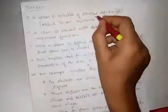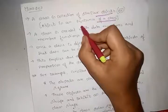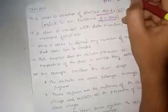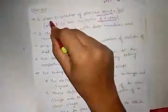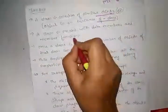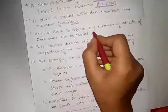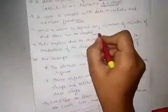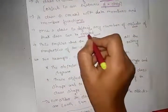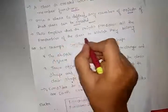The next characteristic is classes. A class is a collection of similar objects, and an object is also called an instance of a class. A class is created with data members and member functions. Once a class is defined, any number of objects of that class can be created.